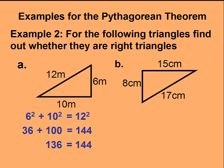The left-hand side is 136, the right side is 144. We know these two values are not equal, therefore this is not a right triangle.